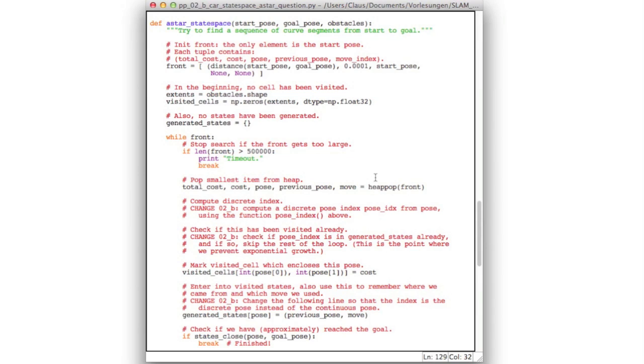And so here is the exploration of the search space which is now called A star, because it is indeed an A star-like algorithm which keeps track of the nodes that were already visited. So all the rest is identical to the previous version, and it starts to get interesting here. Here you'll have to do some changes. So at the very moment I pop my next pose from my heap, I will have to compute a discrete version of this pose using the above function. So that's not too hard to do; it's just one line. And then I will check if this discrete version of the pose is in the dictionary of generated states already. And if so, I will skip the rest of the loop.